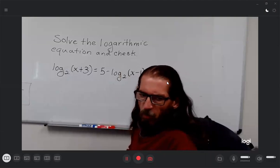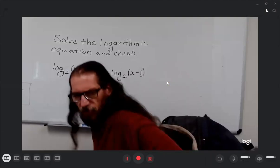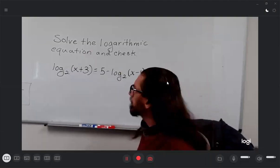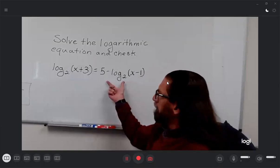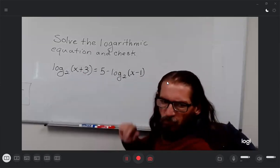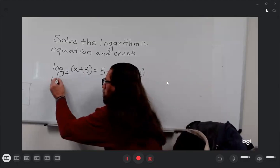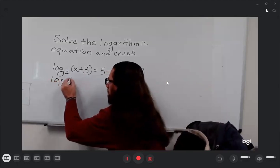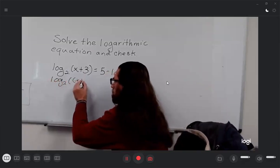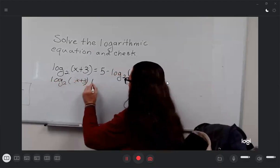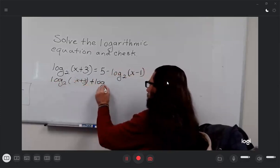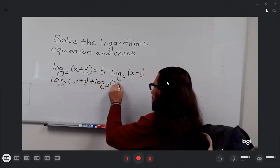Here we've got two separate logarithms, although they are with the same base. So if we add this one to the other side, we can apply the product rule to get them into a single logarithm.